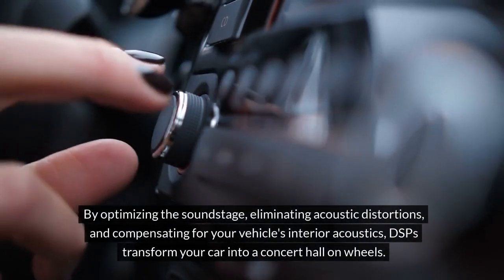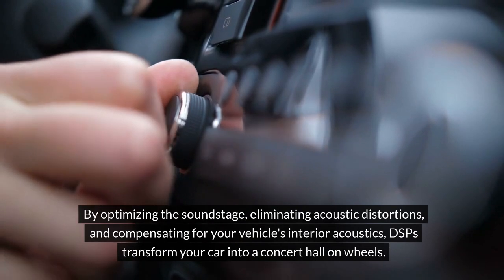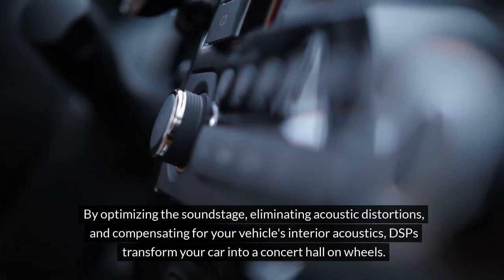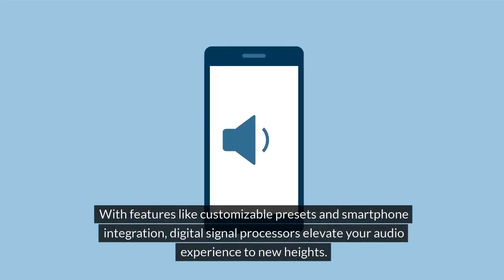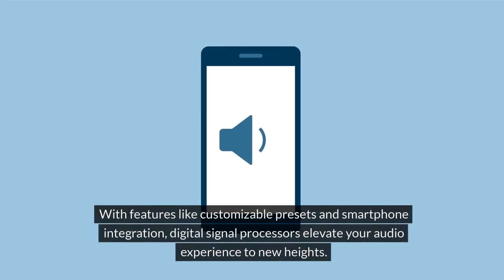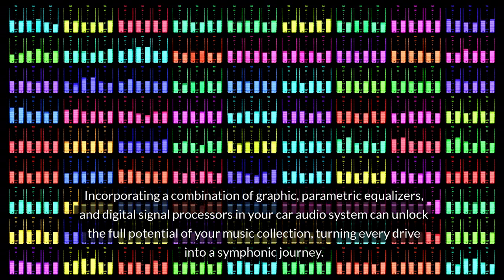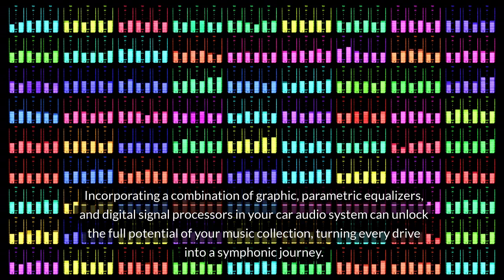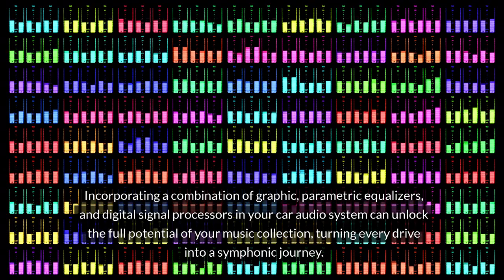By optimizing the soundstage, eliminating acoustic distortions, and compensating for your vehicle's interior acoustics, DSPs transform your car into a concert hall on wheels. With features like customizable presets and smartphone integration, digital signal processors elevate your audio experience to new heights. Incorporating a combination of graphic and parametric equalizers and digital signal processors in your car audio system can unlock the full potential of your music collection, turning every drive into a symphonic journey.